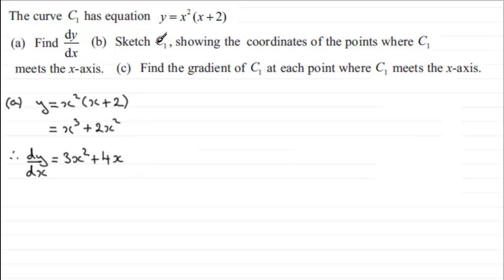Now in part B, we've got to sketch this curve C1, showing the points where it crosses the x-axis, or meets the x-axis. So in part B, let's set up our axis first of all. So we've got a y-axis and we've got an x-axis.